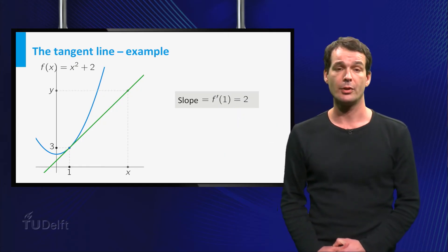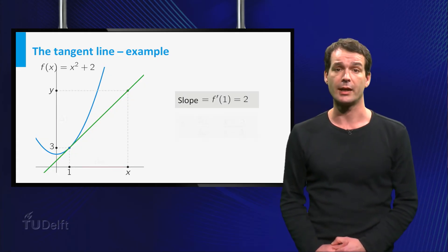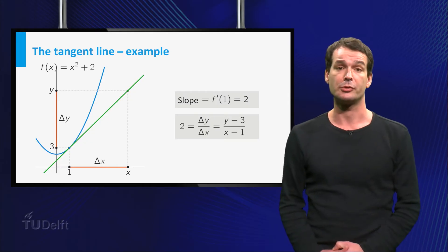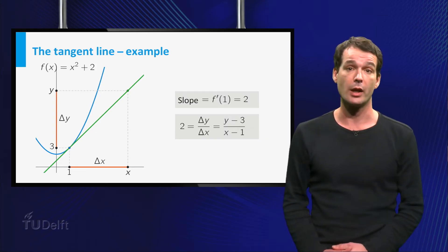For the next step we choose a point on the tangent line. Now the slope of the tangent line, which is 2, is equal to delta y divided by delta x, where delta y is equal to y minus 3, and delta x is equal to x minus 1.